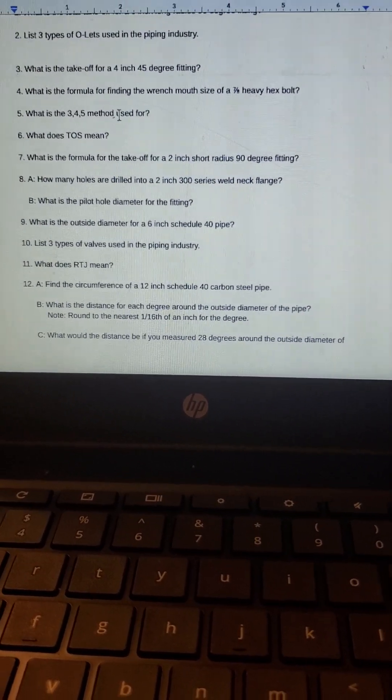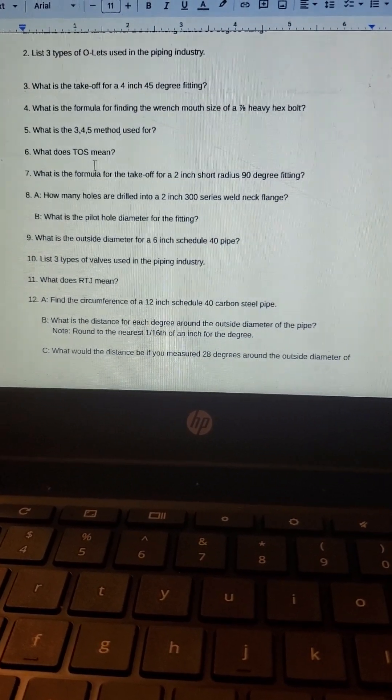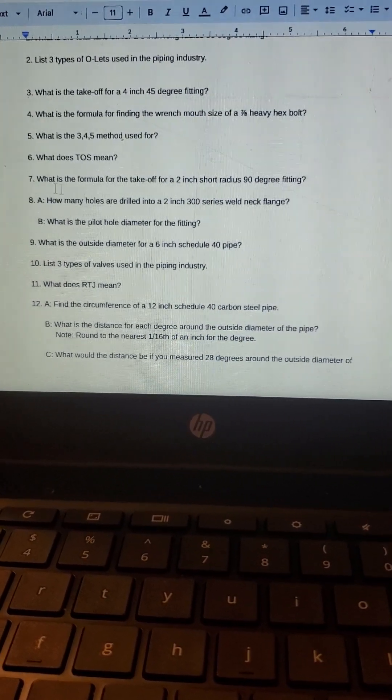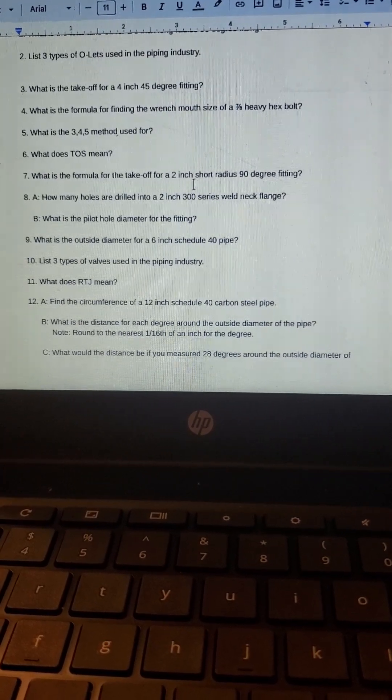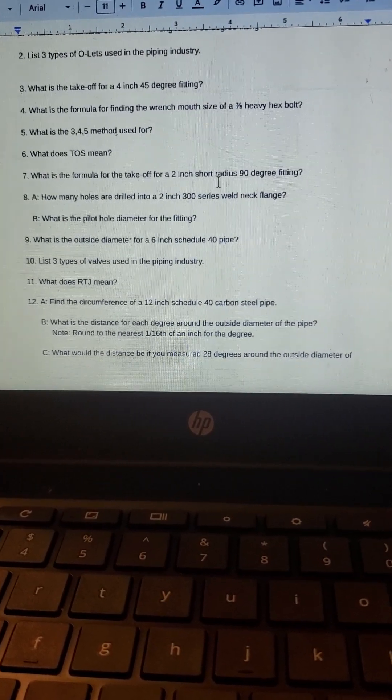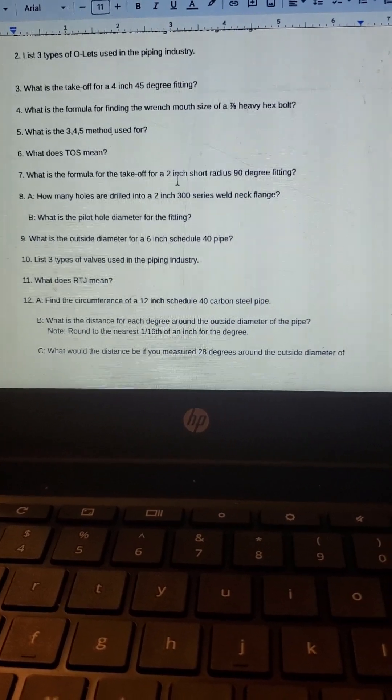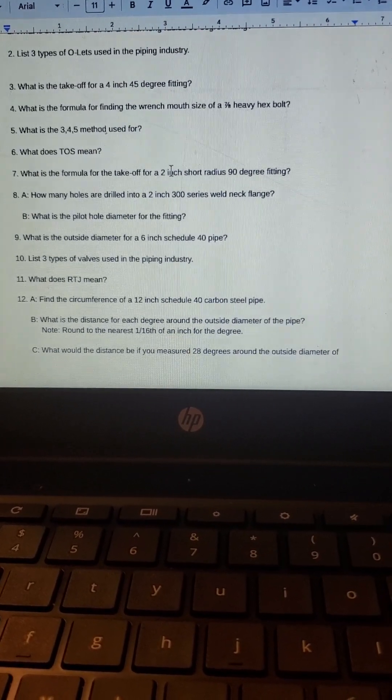What does TOS mean? That means top of steel. What is the formula for the takeoff for a two inch short radius 90? If it's a short radius 90, there really is no takeoff. It's just the diameter of the pipe itself, so it'd be two inches.